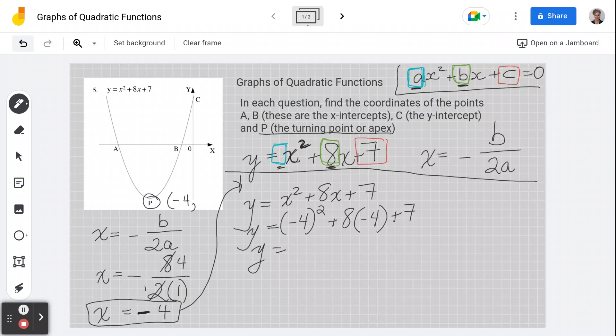So remember, a negative times a negative is a positive. So negative 4 times negative 4 is 16. Positive times a negative is a negative. 8 times 4 is 32 plus 7. So if we work, feel free to get a calculator. If we have 16 take away 32, 16 plus 7 is negative 9. So y is negative 9.